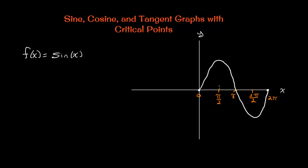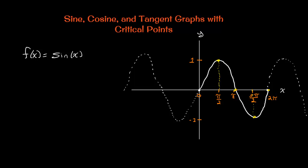We have critical points at π/2, π, 3π/2, and 2π. This sine function has a max value of 1 and a min value of −1. From this graph we recognize the max and min are at 1 and −1, so we can identify the range quickly. This function continues on both the negative x side and the positive x side — it goes on infinitely in both directions.